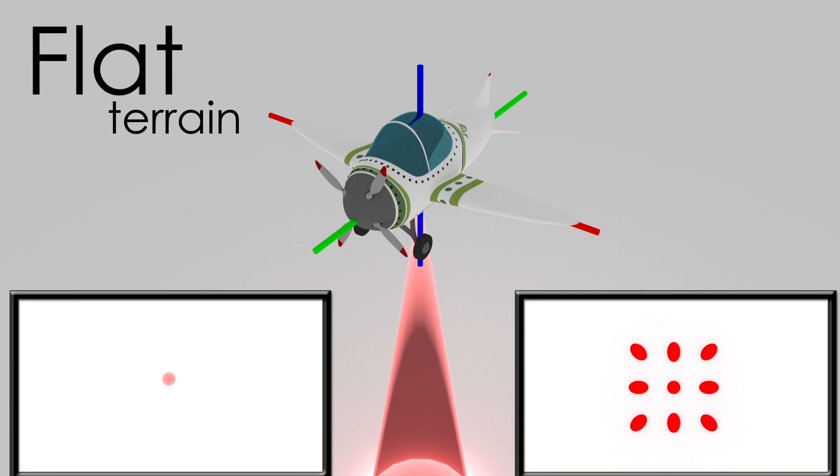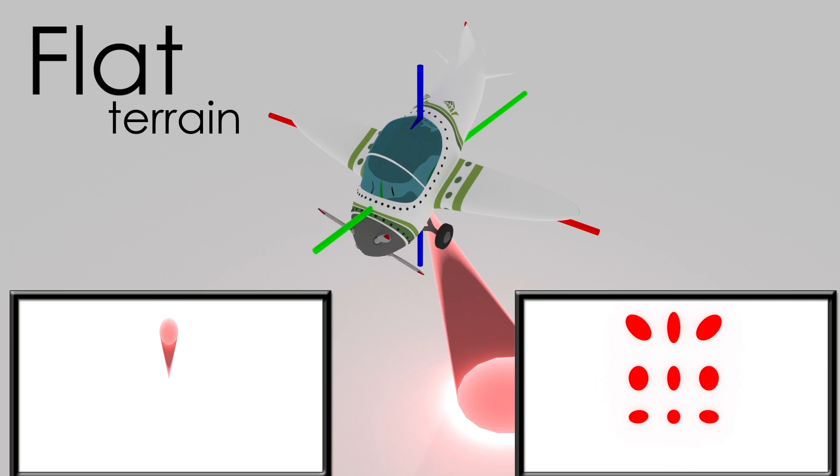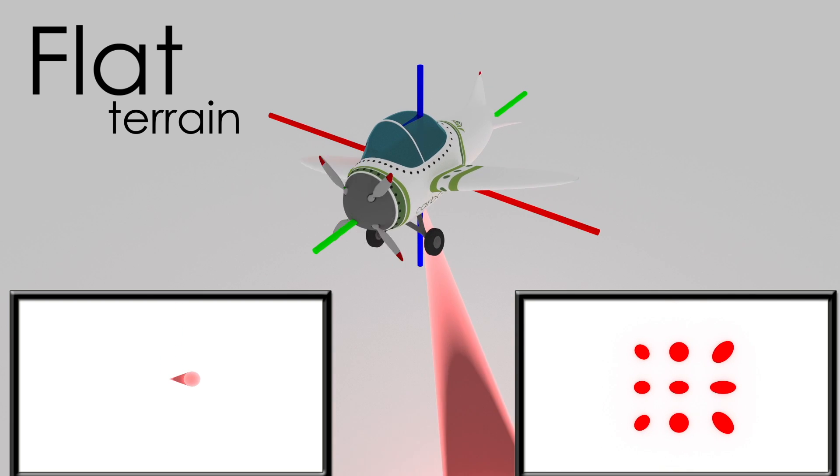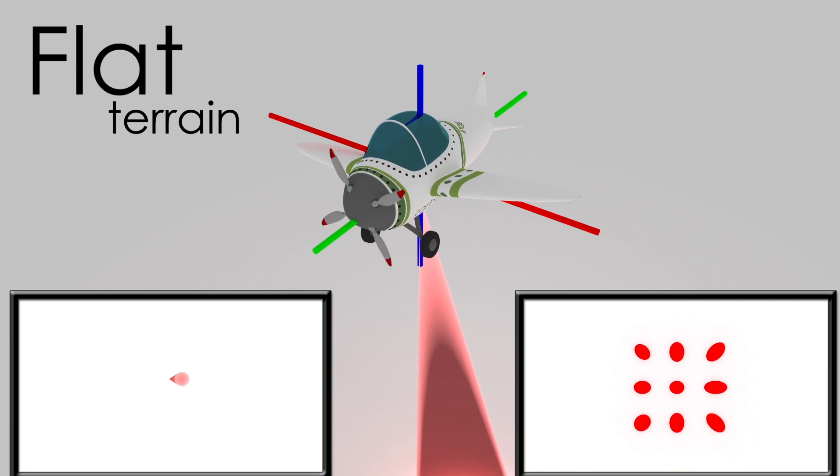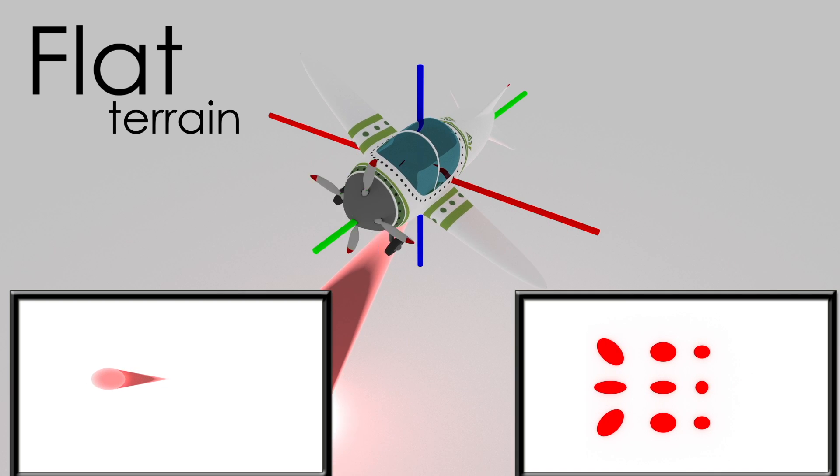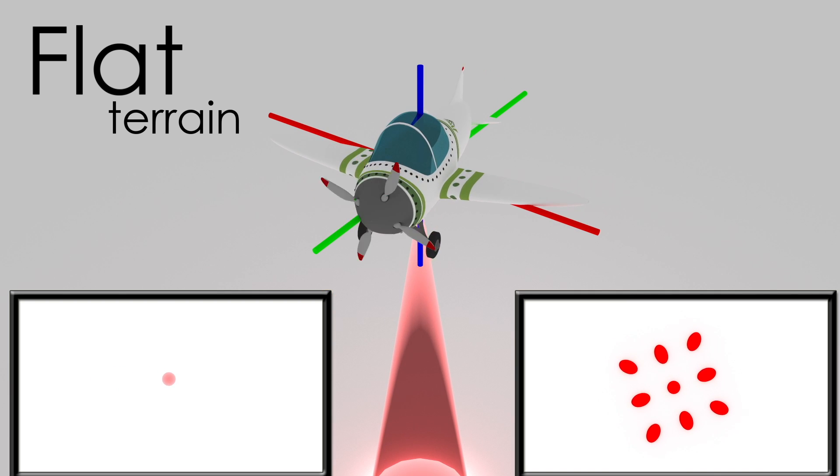Pitch will tend to stretch the pattern forward and backwards. Roll will stretch the pattern left and right. And yaw will rotate the pattern.